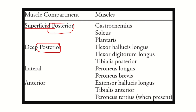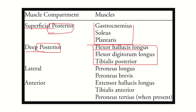To summarize: the superficial posterior compartment contains three muscles — gastrocnemius, soleus, and plantaris. The deep posterior compartment also contains three muscles — flexor hallucis longus, flexor digitorum longus, and tibialis posterior. There are also lateral muscles (peroneus longus and peroneus brevis) and anterior muscles. Our focus is on the deep posterior group.